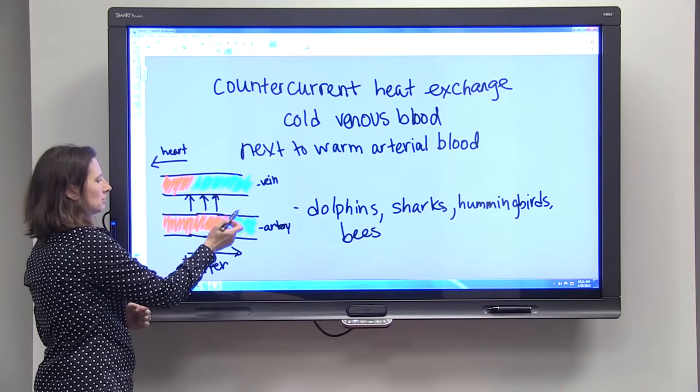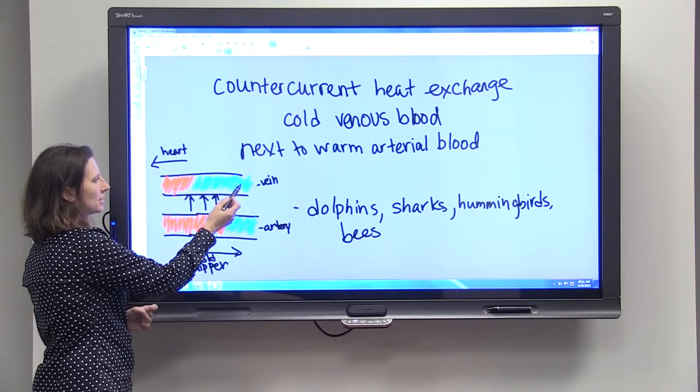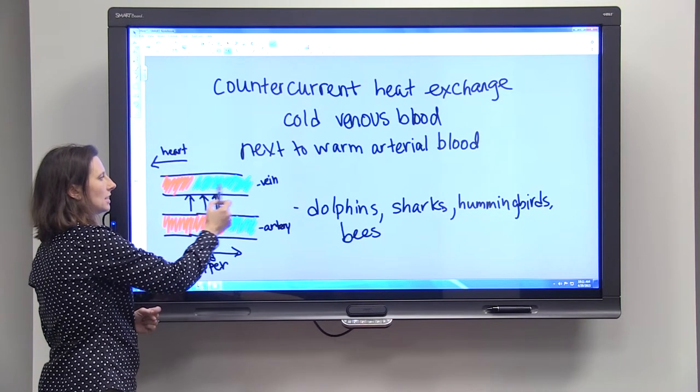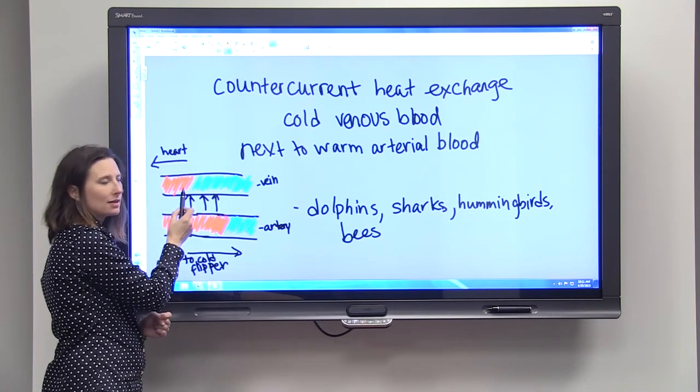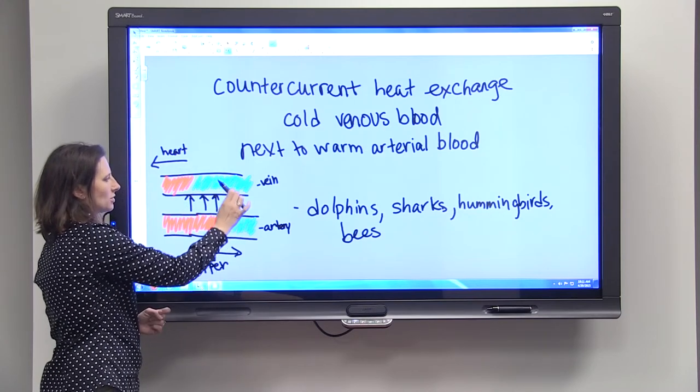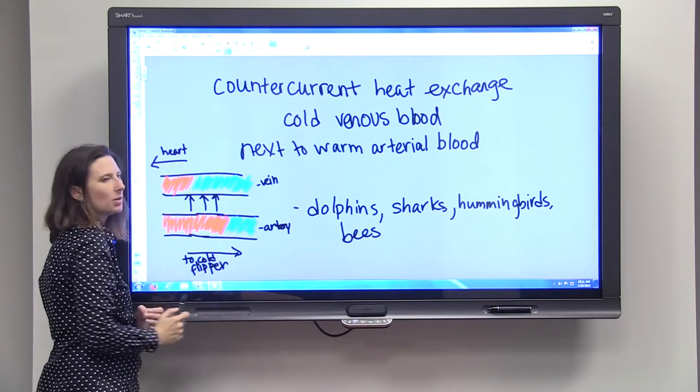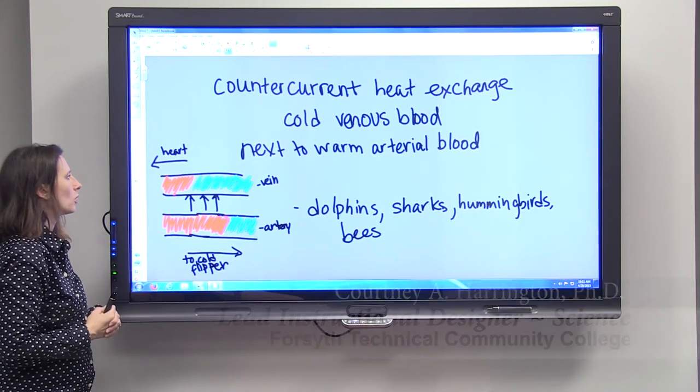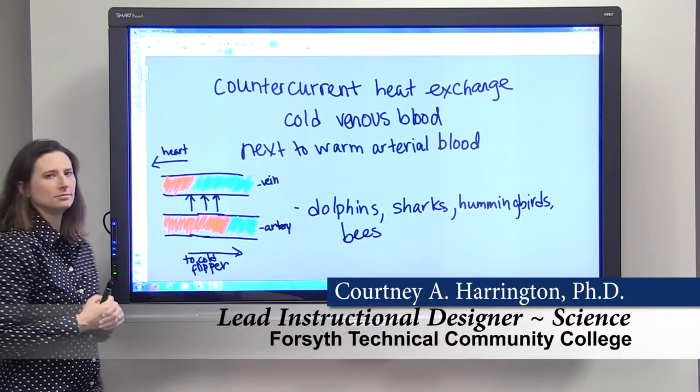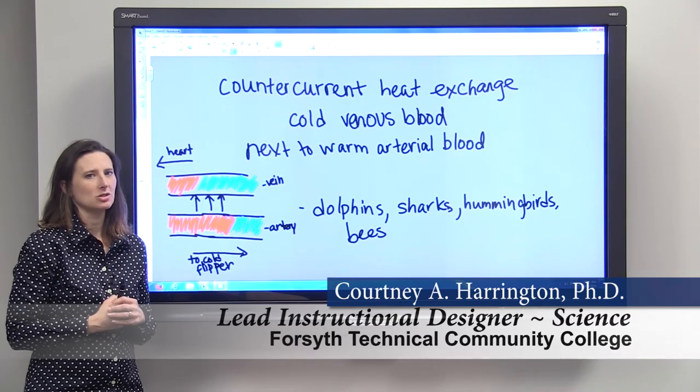Vice versa, because this venous blood is cold, it's going to go to the heart. Instead of going to the heart and making the heart cold, it absorbs the heat from the arterial blood and keeps the internal organs and heart warm. So that's how counter current heat exchange works.